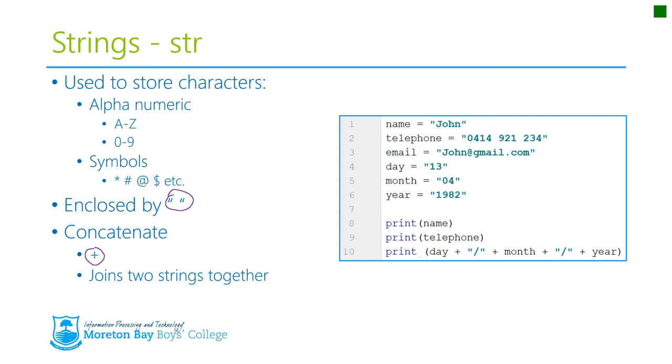So what we've got is three lines of code here. They're going to print to the console. They're going to print the variable name, the variable telephone, and the variable day concatenated with a slash sign, concatenated with month, concatenated with another slash sign, concatenated with year. What I want you to do is take a couple of seconds before you go to the next slide and just write down what you think the console output would be, because the answer is on the next slide.